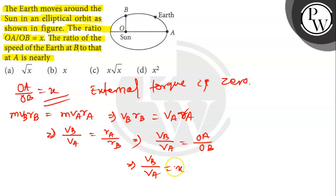So the ratio of velocity of Earth at point B to that at point A is X. Option number B is the correct answer. Thank you.